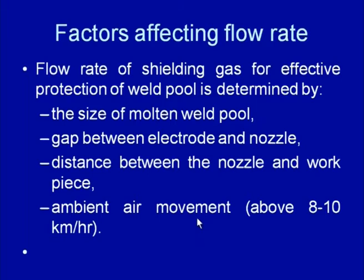The higher the air movement, the greater the turbulence and disturbance to the shielding effect, and therefore the higher the flow rate required to maintain proper shielding. Whenever the ambient air movement is more than 8 to 10 kilometers per hour, a higher flow rate of the shielding gases will be required to maintain the desired shielding effect.